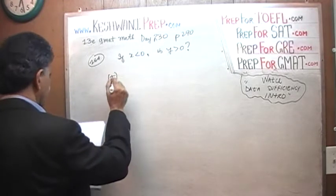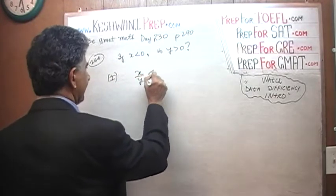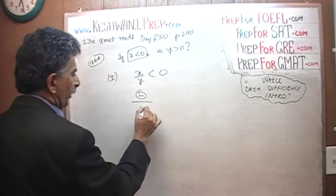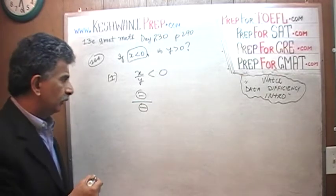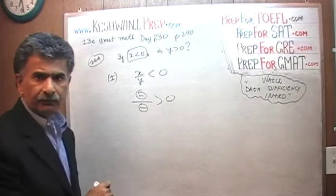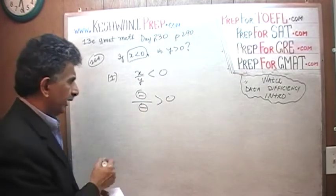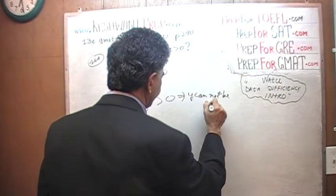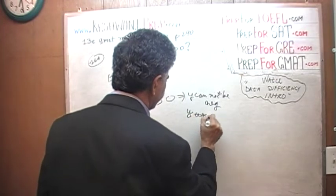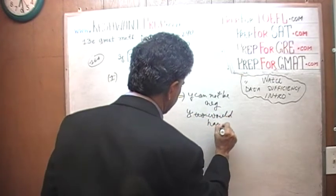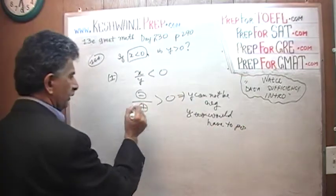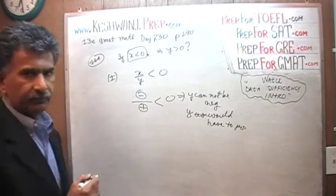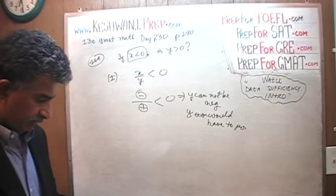In the first statement, they tell us that x over y is negative. Well, we are already told that x is negative. If x is negative, could y also be negative? No, because negative over negative would be positive. So y cannot be negative. This tells us that y cannot be negative. y would have to be positive because negative divided by positive will remain negative and therefore it is less than zero. That's all. It's just a matter of figuring it out, that part.